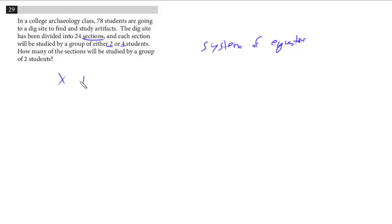So we could just make an equation, x plus y equals 24. Let's say x represents the sections with two, y the sections with four. This is the total number of sections.